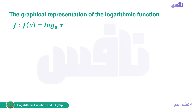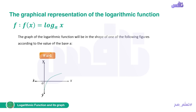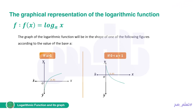The graph representation of the logarithmic function f where f(x) equals log base a of x takes one of two shapes depending on the value of a. If a is greater than 1, the graph is increasing and passes through the point (1, 0). If a is greater than 0 and less than 1, the graph is decreasing and also passes through the point (1, 0). Both cases pass through the point (1, 0).